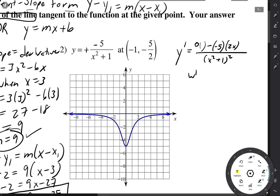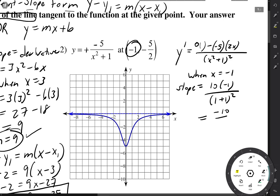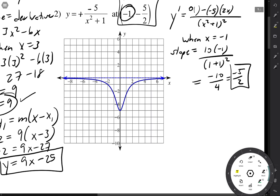When x is negative 1, the slope is going to be a positive 10 times negative 1 over (1 plus 1) squared. So that's negative 10 over 4, giving a lovely negative 5 halves. Now we have a point and a slope, so we can do point-slope form.